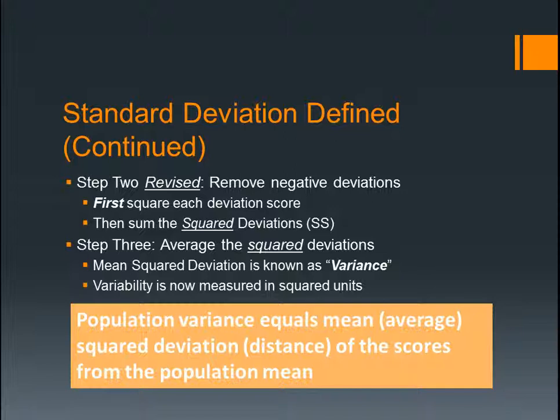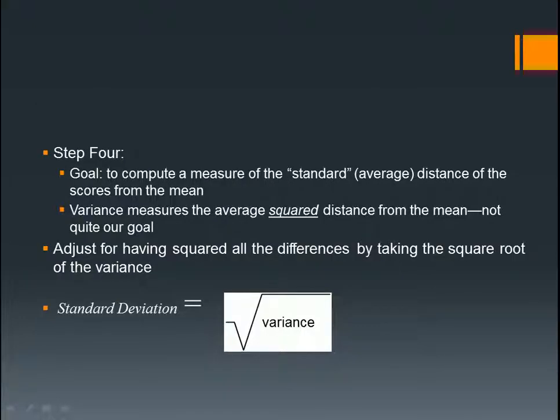Population variance equals the mean, or the average squared deviation, or the distance of the scores from the population mean. This box down here is important. Step four: your goal is to compute a measure of the standard average distance of the scores from the mean — find your standard deviation. Variance measures the average squared distance from the mean, which is not quite what you want, so we usually use standard deviation. Your formula is down there at the bottom: standard deviation equals the square root of variance.